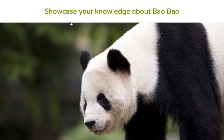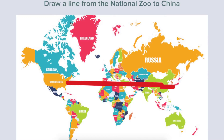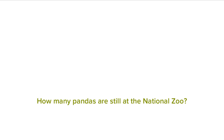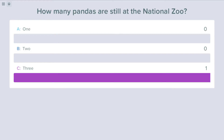So here's what we did. We had the students write and draw a line so they were able to interact with the presentation. They were asked how many pandas are still left in the National Zoo, which turns it into a little bar graph.